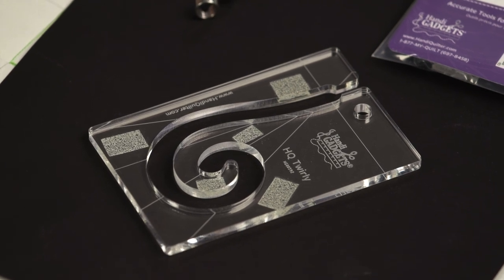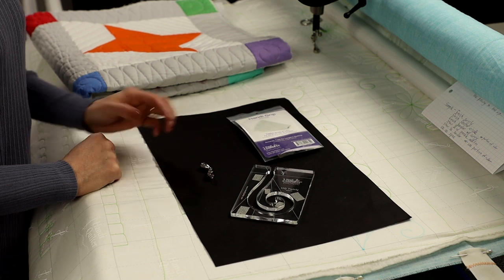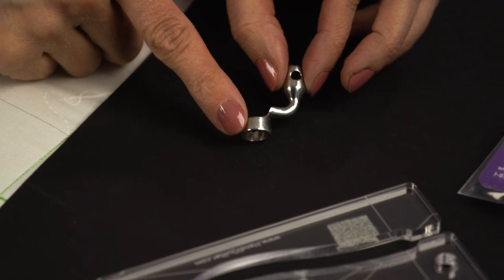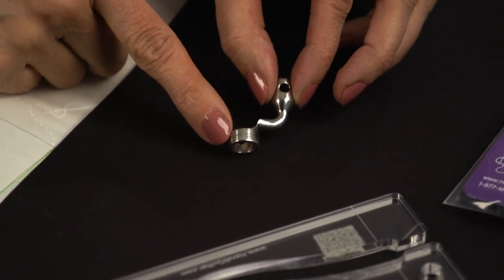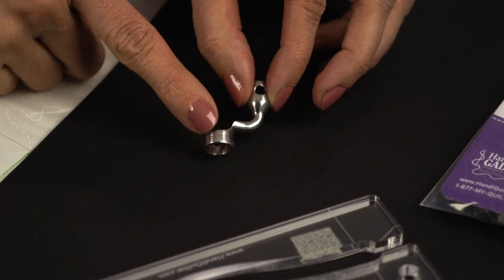Before we begin playing with this ruler, I'd like to cover a few safety issues. First thing that you want to do is make sure you have a sure foot on your machine. The higher profile allows you to have a little bit more safety with the ruler and prevents it from hopping over.